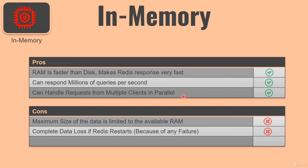Redis can handle millions of queries per second and also redis can handle many parallel queries coming from different clients. You can have many applications querying Redis in parallel and Redis will be able to answer all of them. Again, all of these things depend on the configuration and the size of resources available on the Redis system. But even on a very low configurable system, it is able to handle a very high number of queries per second.